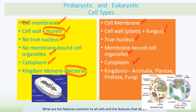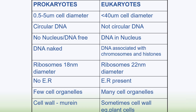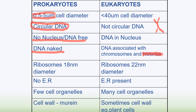Other differences: prokaryotic cells are much smaller than eukaryotic cells. Their DNA is circular, whereas eukaryotic cells have linear DNA. In prokaryotes the DNA is free within the cytoplasm and is naked — meaning it is not associated with histone proteins. Prokaryotes have smaller ribosomes, no endoplasmic reticulum, and fewer organelles overall.